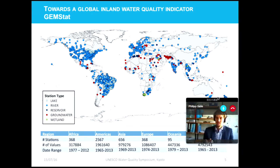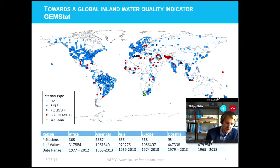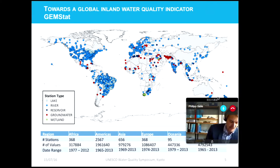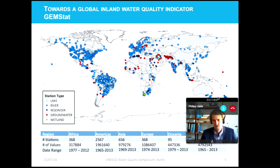GEMS Water, and specifically our center in Koblenz, continues to maintain and extend the largest global water quality database and information system, called GEMSTAT. The global distribution of monitoring stations covers rivers, lakes, reservoirs, groundwater, and wetlands, with more than 4,100 stations in more than 130 countries worldwide, comprising about 4.8 million sampling values for more than 250 water quality parameters, covering a range from 1965 to 2014.